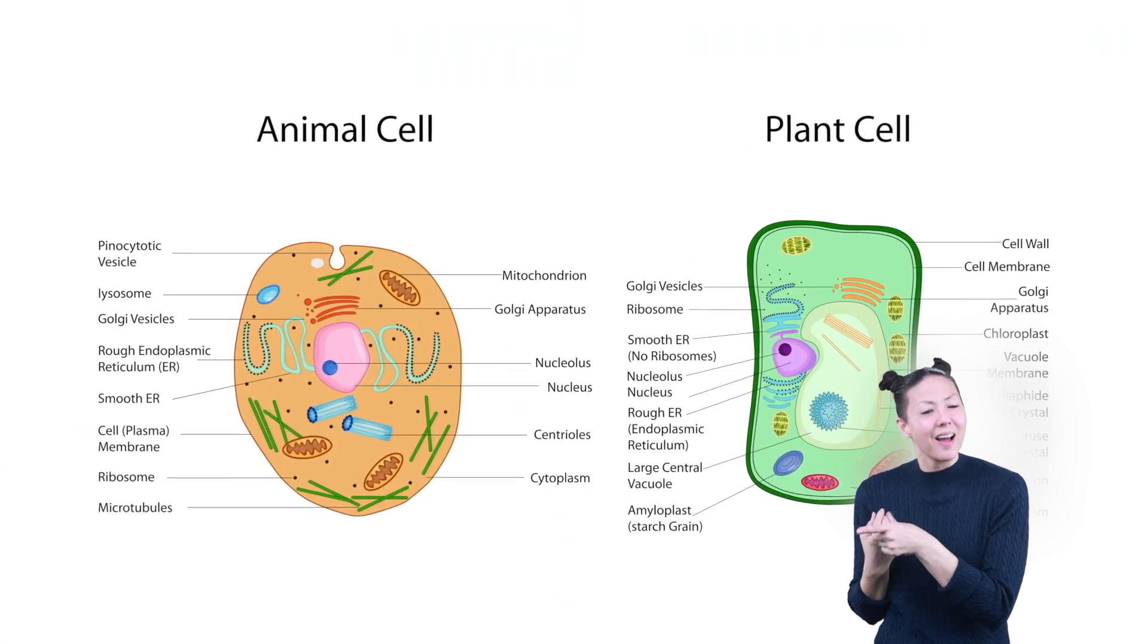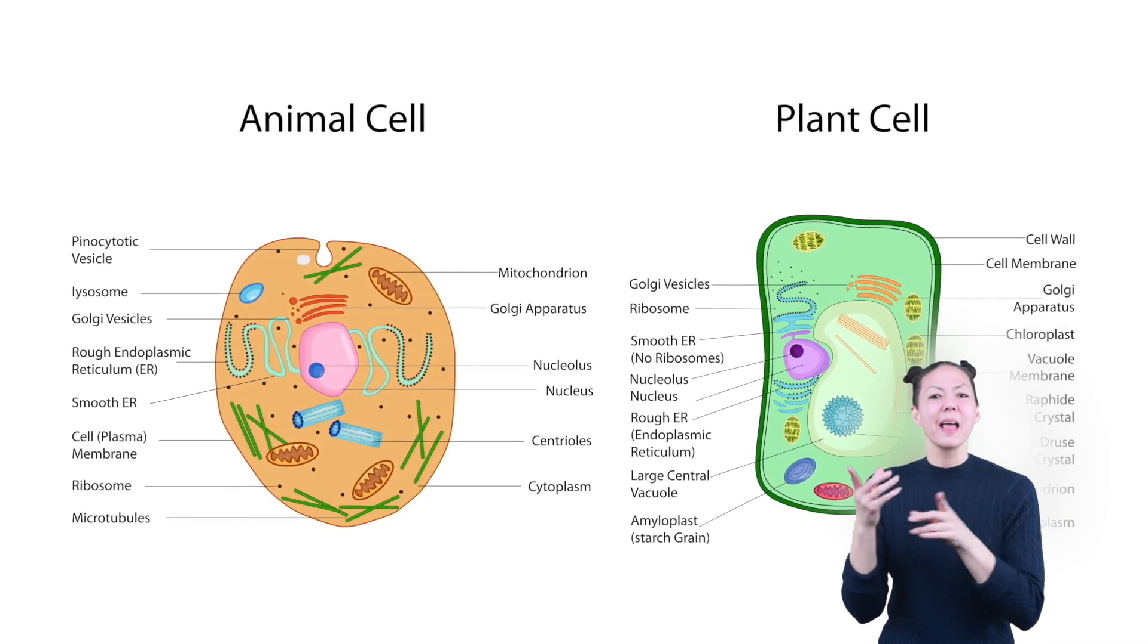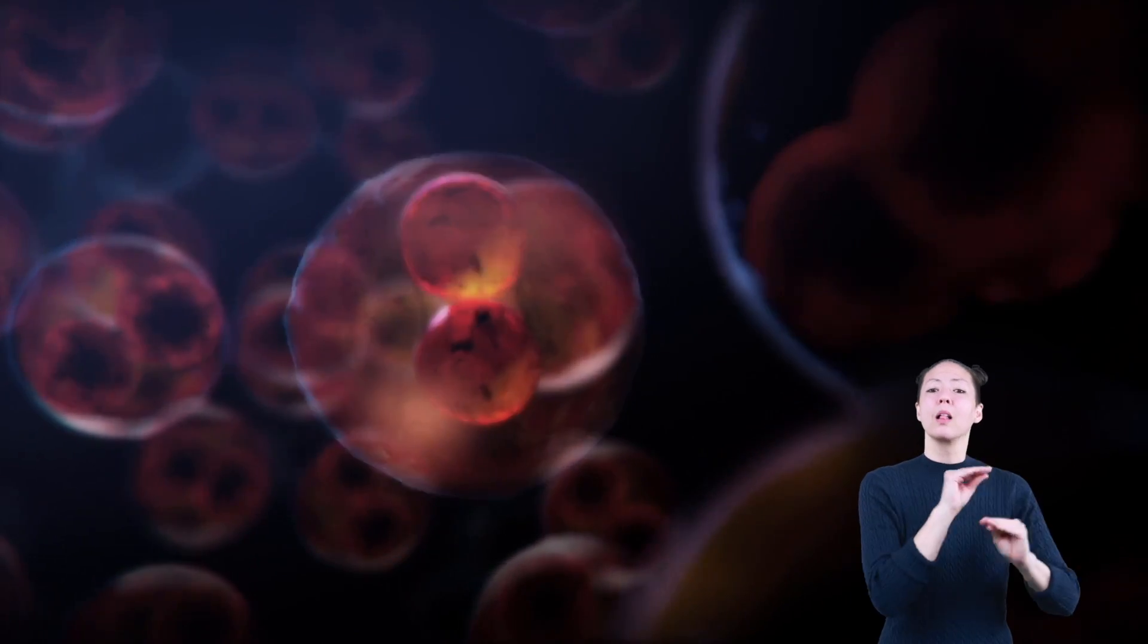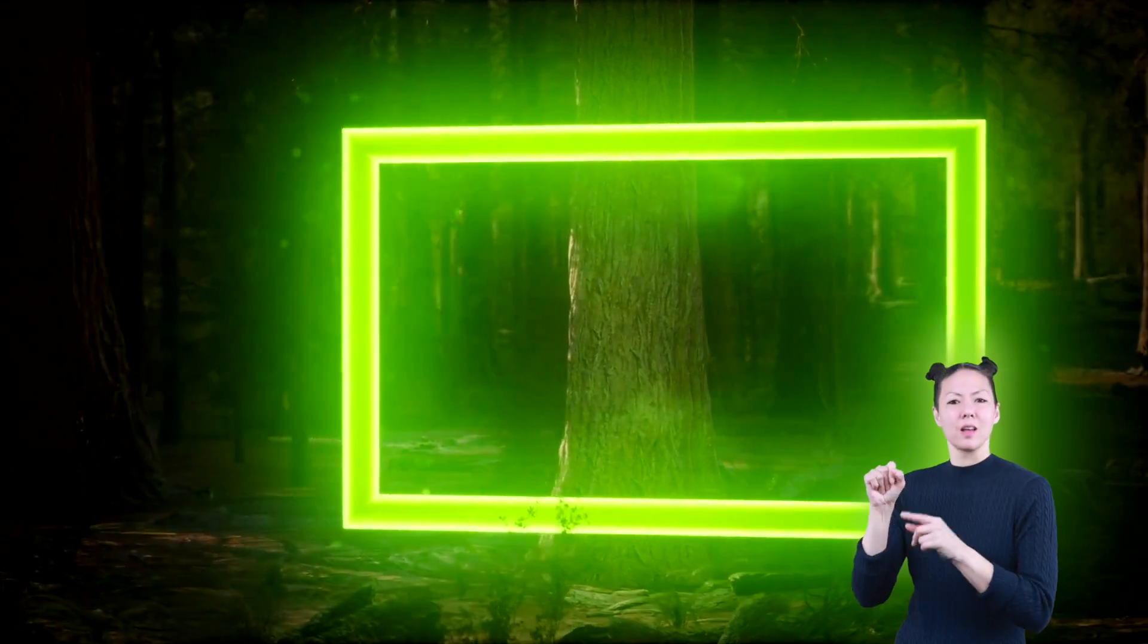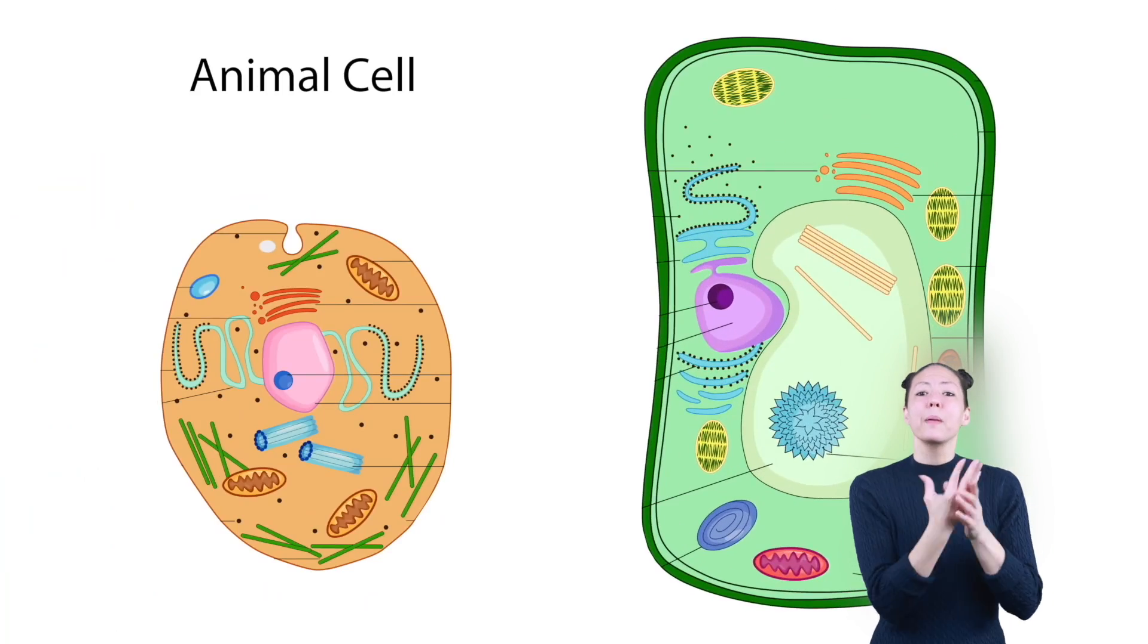Plants and animal cells have many things in common as well as many differences. Animal cells are squishy, movable, and not regularly shaped. Plant cells are rectangular and rigid in shape. Plant cells can be bigger than animal cells.